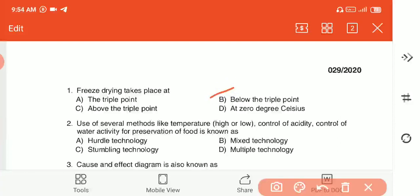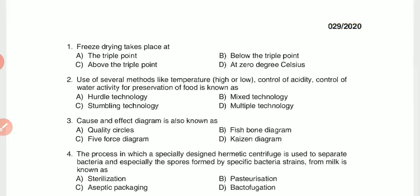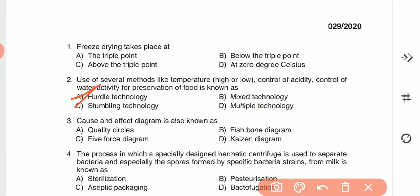Question 2: Use of several methods like temperature control, control of acidity, and control of water activity for preservation of food is known as — (A) hurdle technology, (B) mix-it technology, (C) stumbling technology, or (D) multiple technology. The answer is A — hurdle technology.